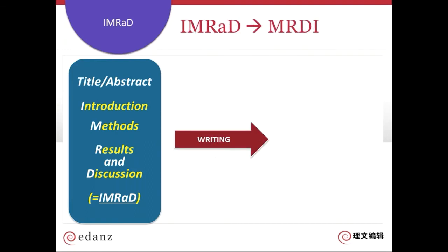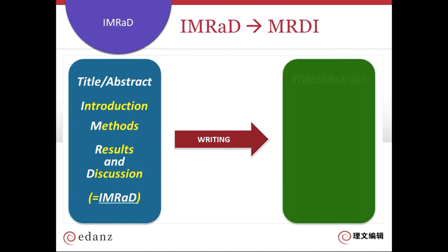When you write your manuscript, we recommend that you draft the title and abstract first. This way, you can use these draft elements to put into the Edanz journal selector, and then choose your target journal. Then begin writing the main text, but don't start with the introduction. Instead, begin with the methods and the results. These are factual sections, and you should have notes and draft illustrations to work from. So these are often the easiest sections to write, and the ones that are freshest in your mind.